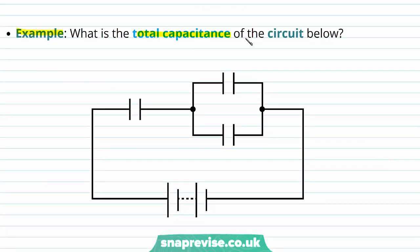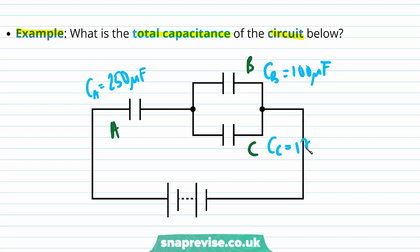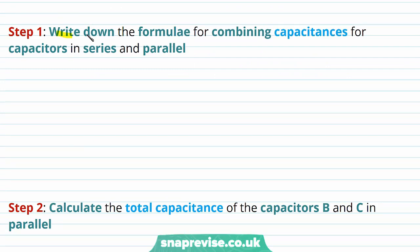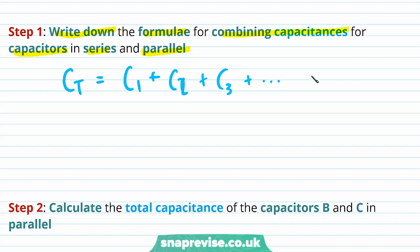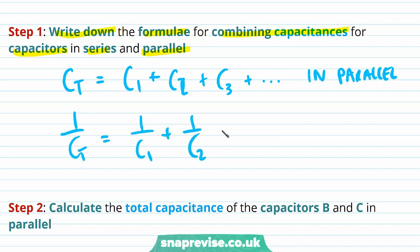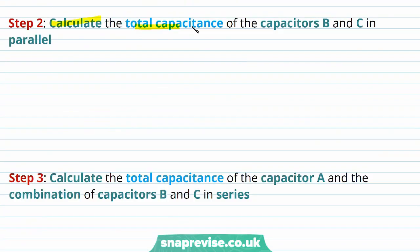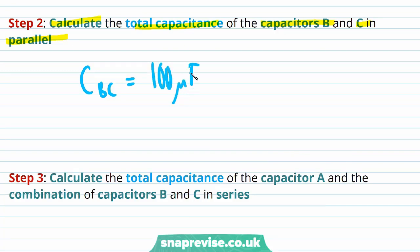Let's do an example. What is the total capacitance of the circuit below? We have three capacitors A, B, and C. A has capacitance 250 µF, B has capacitance 100 µF, and C has capacitance 175 µF. Step 1: write down the formulas for combining capacitances in parallel (Ct = C1 + C2 + C3...) and in series (1/Ct = sum of reciprocals). Step 2: calculate the total capacitance of capacitors B and C in parallel. We call this CBC = CB + CC = 100 µF + 175 µF = 275 µF.